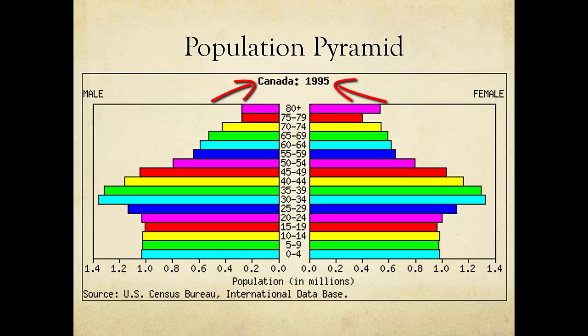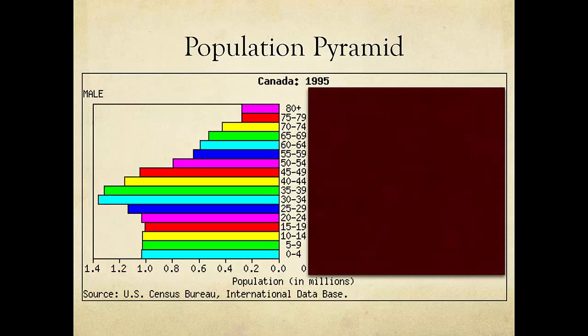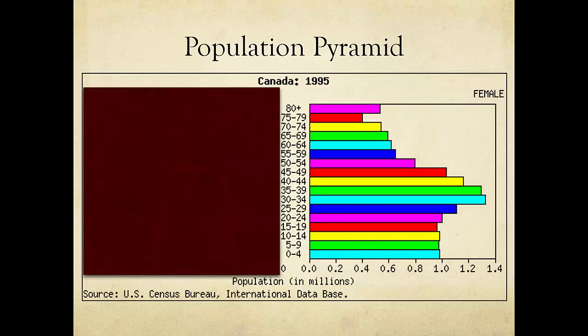Population pyramids are organized by gender. The male population is shown on the left and the female population on the right.